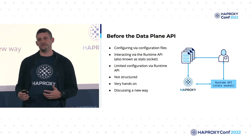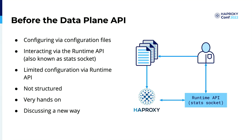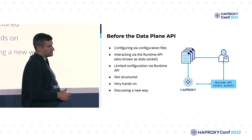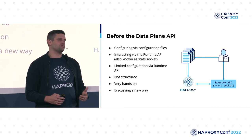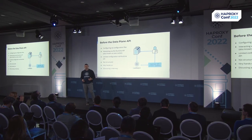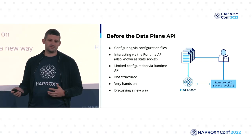As all journeys, let's start at the beginning. Our beginning starts with a challenge and an idea. The year is 2018 and the only way you could interact with HA Proxy was by changing the configuration file and reloading it, or interacting with the runtime API — also known as the stat socket — you can configure in your configuration. The runtime API had some limitations on how you can change configuration on the fly, while changing the configuration file every time you need a small change has its drawbacks too. Those were very hands-on approaches and required direct access to the machines where HA Proxy is running, and it was very unstructured.